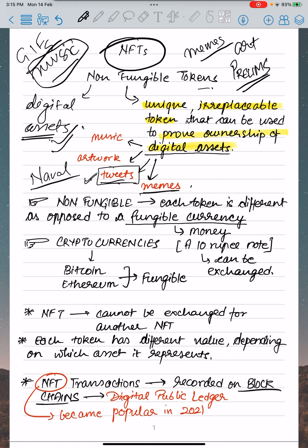Non-fungible tokens — what do you mean by the term non-fungible? Non-fungible means each token is different, as opposed to a fungible currency. Fungible currency, like money — money is an example of fungible currency. A 10 rupee note is a fungible currency; you can exchange it for a good or any item. But you cannot do that with NFTs.